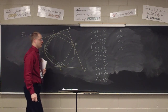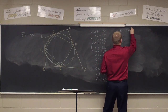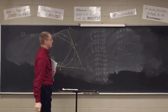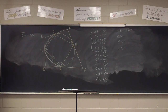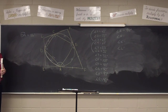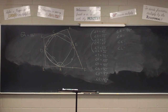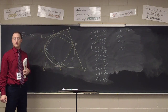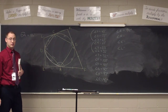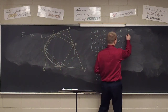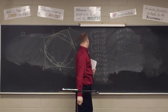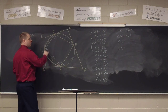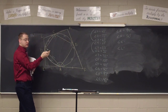At your seats, find angle F. You have a 130 arc here, that leaves 230 there. The difference is 100, the angle is 50 degrees. Angle K — 116 degrees.